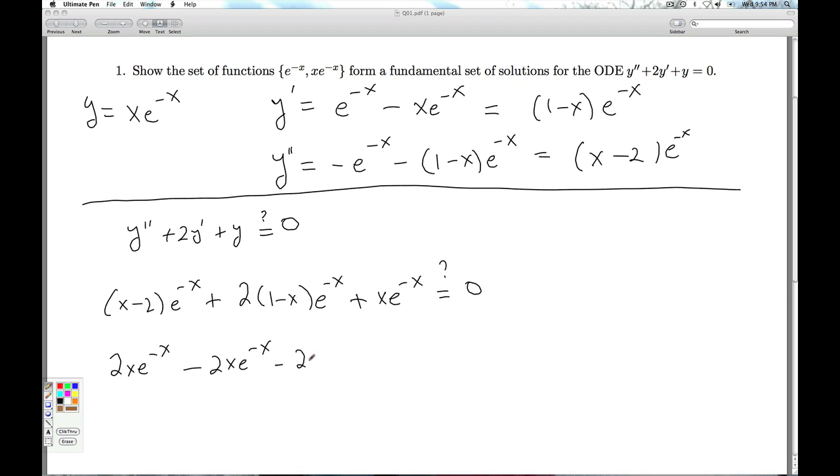Here I get minus 2e to the minus x. Here I get plus 2e to the minus x. Is that zero? Those cancel off. Those cancel off. Those cancel off. And sure enough, I get 0 equals 0. So we've just shown that both of these guys are solutions to the differential equation.